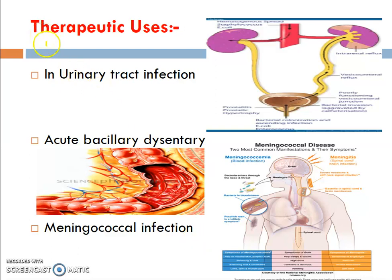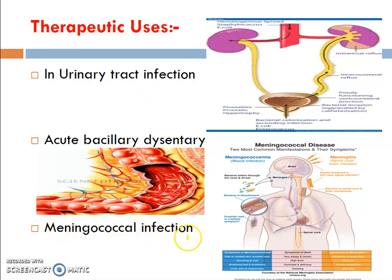Therapeutic uses: urinary tract infection. Acute bacillary dysentery and intestinal infections. Meningococcal infection, that means infection of the outer layer of the brain, is also treated with sulfonamides.